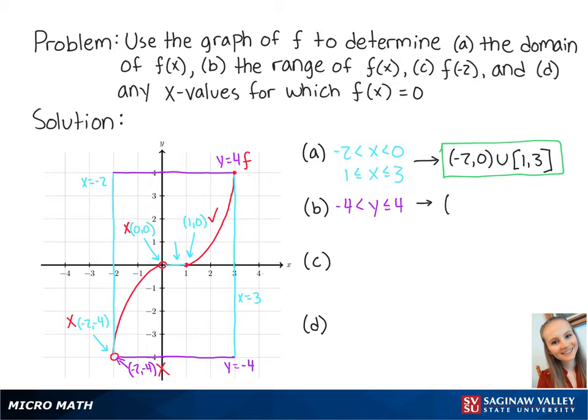So we can write the range as negative 4 to 4, with a parenthesis on the left because negative 4 is excluded, and a bracket on the right because 4 is included.